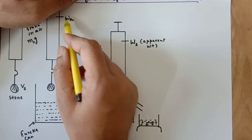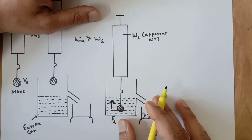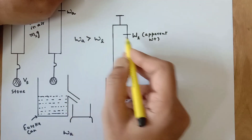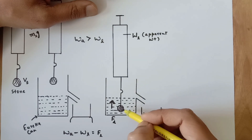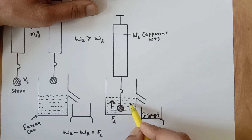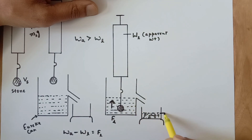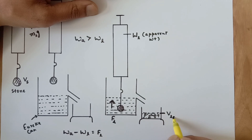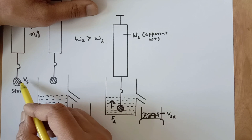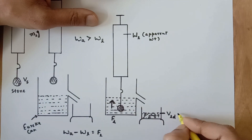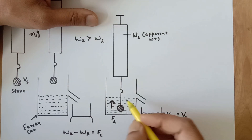Due to this force, the weight in air will be reduced. Archimedes principle states that weight in air minus the weight in liquid equals upthrust. The moment you immerse the stone inside the liquid, liquid is going to overflow out. The volume of the liquid displaced, VLD, is collected in the beaker. The volume of this displaced liquid is equal to the volume of the stone when completely immersed.